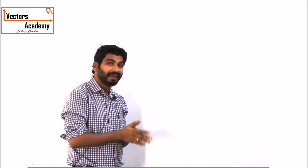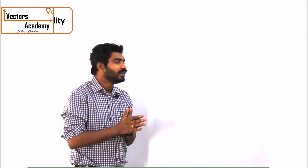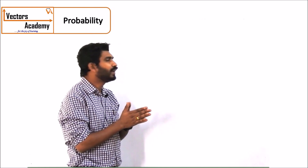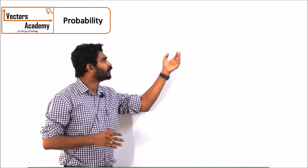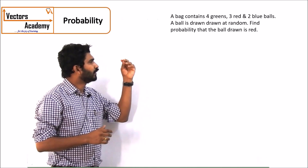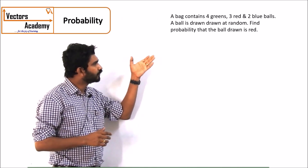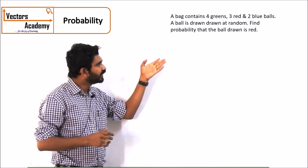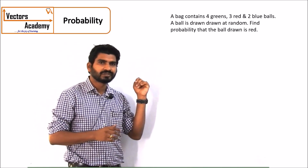Hi, so now as we have finished the basics of probability, we will look at some more advanced questions on probability. For example, look at this question: there is a bag which contains 4 green, 3 red and 2 blue balls.